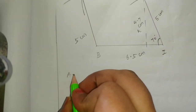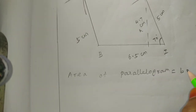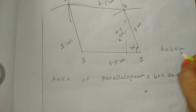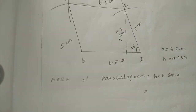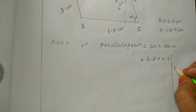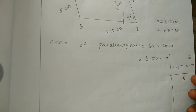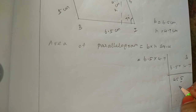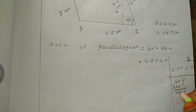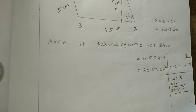Formula: Area of parallelogram = base × height square units. Base = 6.5 cm, height = 4.7 cm. So area = 6.5 × 4.7. Calculating: 5×7=35, carry 3; 6×7=42, 42+3=45; 5×4=20, carry 2; 6×4=24, 24+2=26. Result: 30.55 square centimeters.